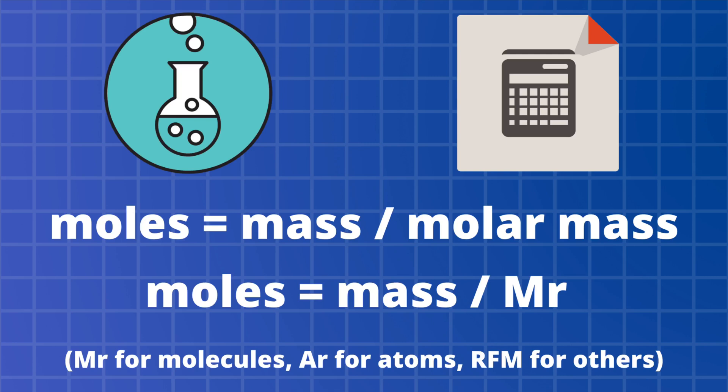The second equation uses MR. MR stands for relative molecular mass, and the relative molecular mass of a substance is the sum of all of its relative atomic masses, which can be found from the periodic table. For example, the relative atomic masses of hydrogen and oxygen are 1 and 16 respectively. Because the formula of water is H₂O, the relative molecular mass of H₂O is 18 — two hydrogens and one oxygen AR value added together.